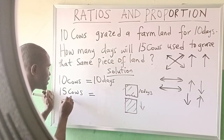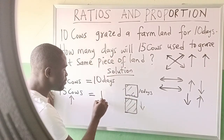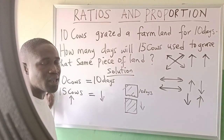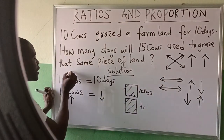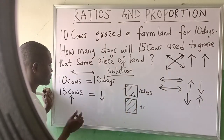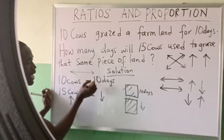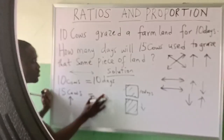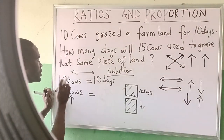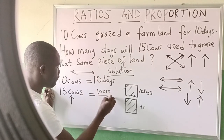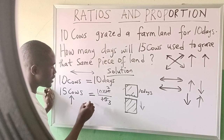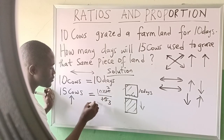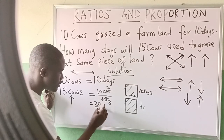When the number of cows is increased, the number of days required will be less because more cows will be at work to graze that farmland. So what we now have is inverse proportion. That means: 10 times 10, then 10 over 15. Simplifying: 100 over 15 gives us 20 over 3, that is 20 over 3 days.